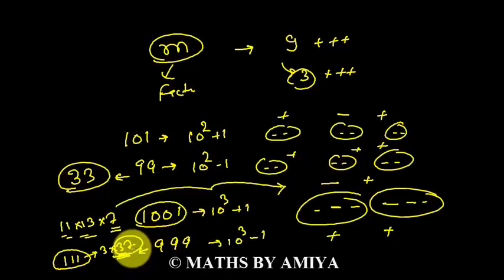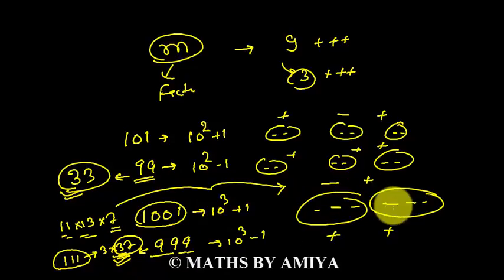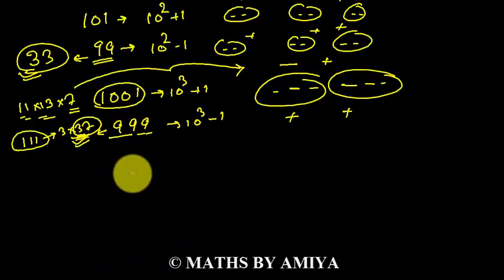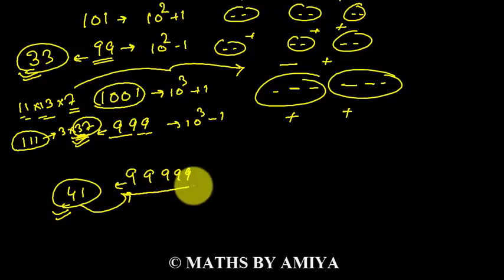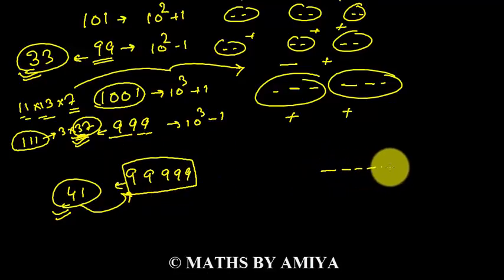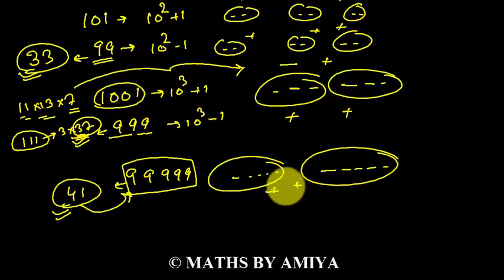I hope it is clear. So if you need to check the remainder by 33, use the rule for 99. If you need to check the remainder by 37, use the rule of 999 — making a bundle of 3 and adding all bundles. Similarly, 99999 (5 nines) has 41 as one of its factors. So the rule for 41 is the same as for 99999: make a bundle of 5 digits from the right-hand side and add all the bundles to get the answer.